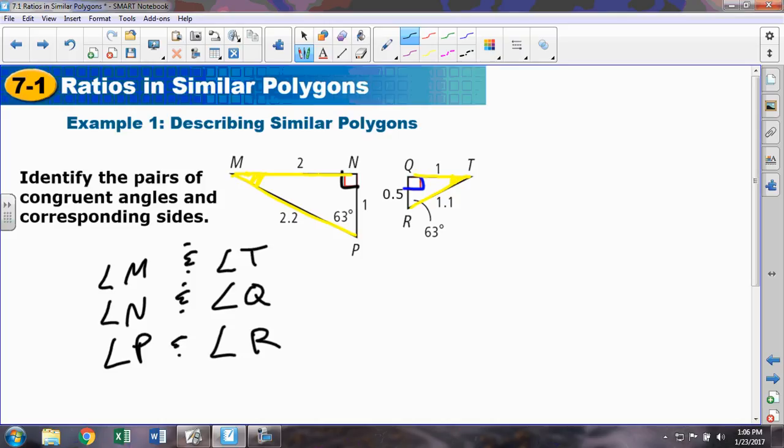Now let's get the three sides. Short side, medium side, and long side. What do they get paired with? Of course, short, medium, and long have to correspond with short, medium, and long. NP would match up with QR. And MN would go with QT. And MP with TR.